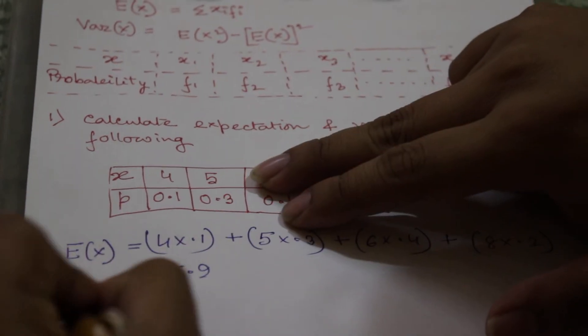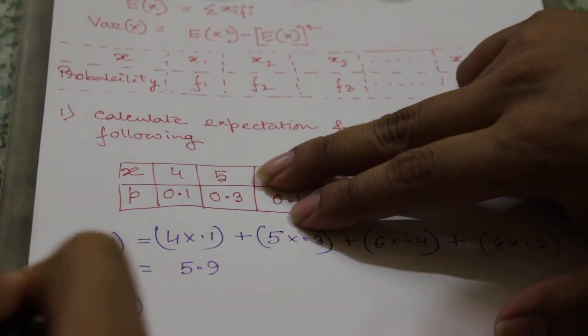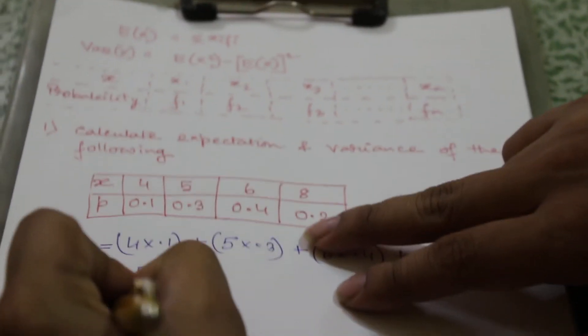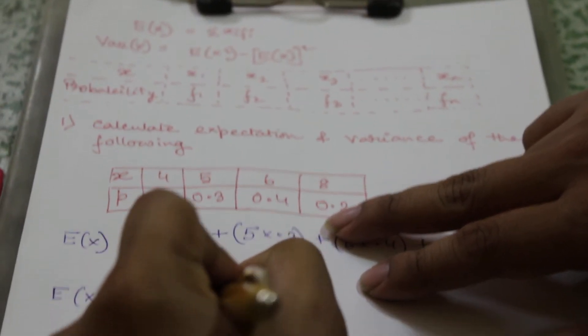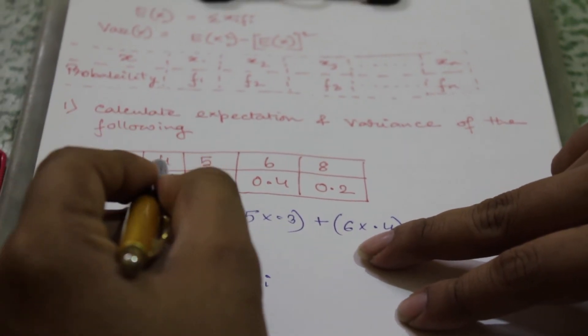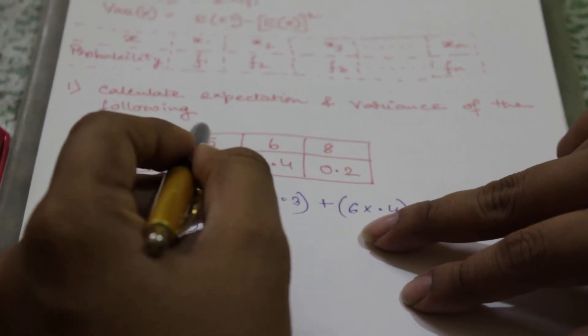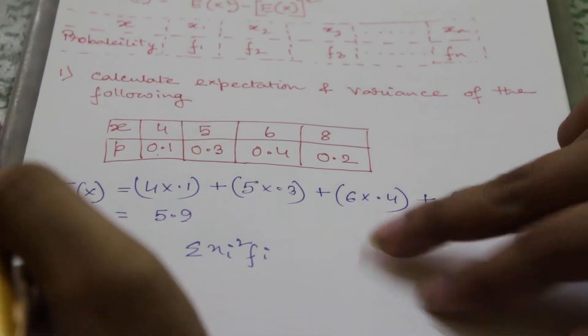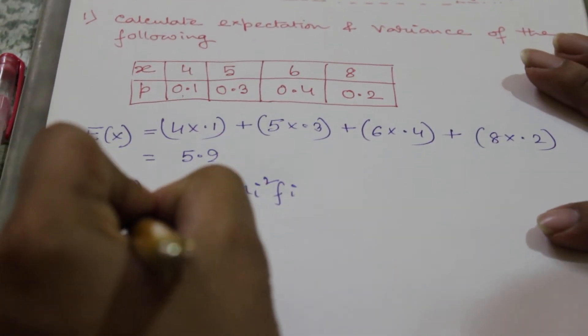To get variance, E(X^2) is summation of xi square into fi. That means we have to square this and multiply with this, and for this also we have to do the same, and then we'll add together.